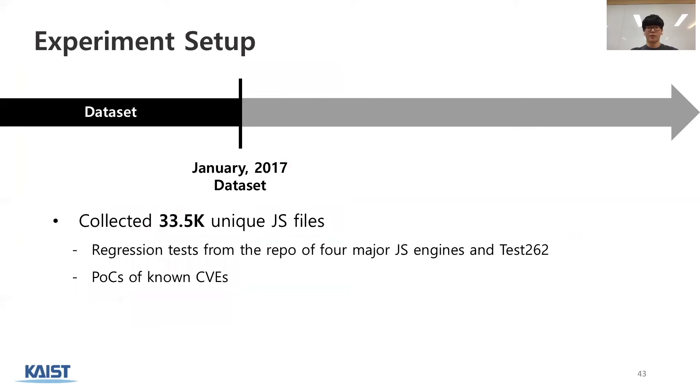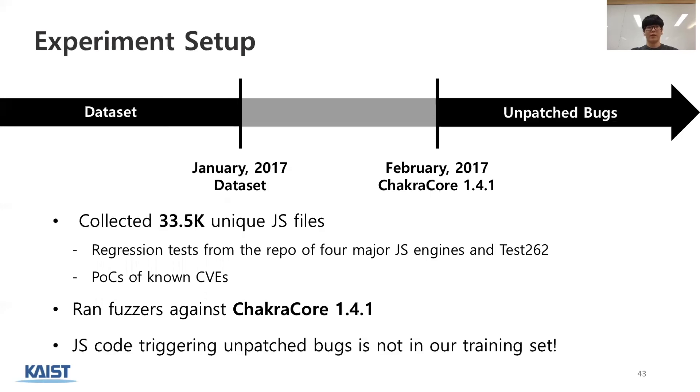To evaluate our fuzzer Montage, we collected 33.5k unique JS files from the repositories of four major engines as of January 2017. Then, we ran fuzzer against ChakraCore 1.4.1, which is released in February 2017. That is, JS code triggering unpatched bugs in this version of ChakraCore does not exist in our training set.